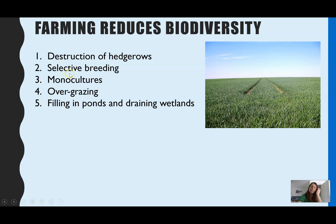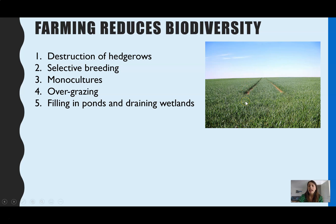Selective breeding is when plants or animals displaying desirable characteristics are constantly selected to reproduce, to ensure those desirable characteristics appear in future generations. But in doing that, you're narrowing down the gene pool and you don't have as much diversity. Monocultures — as seen in the photo here — is when you're only growing one plant species in an entire field. If you've only got one plant species, straight away that is a low diversity, and it's only going to attract the same insects that can feed on it, giving you a much lower diversity overall.